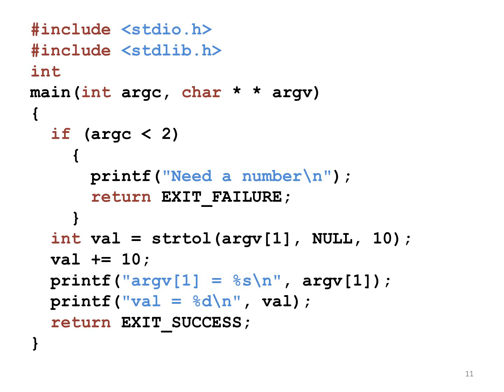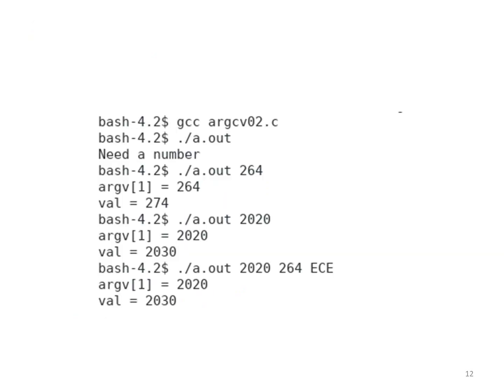Let us run the program. First, use GCC to convert the program to an executable file. By default, the name of the executable file is a.out. If we run the program without any additional argument, the program prints a message saying that it needs a number.